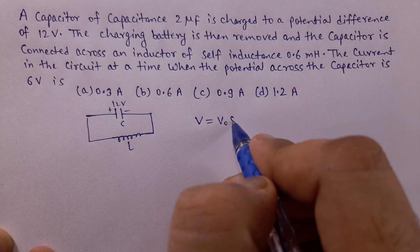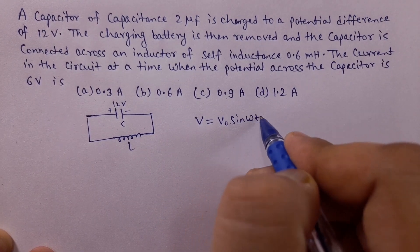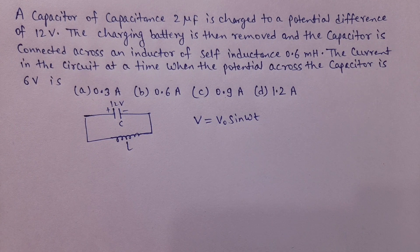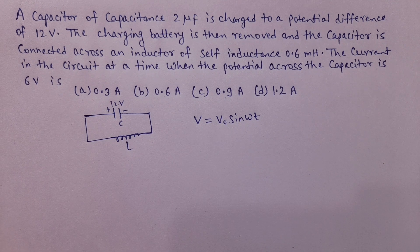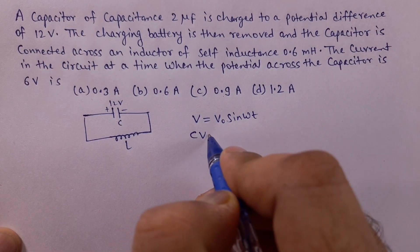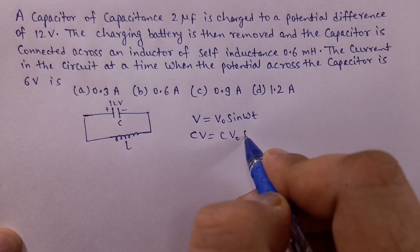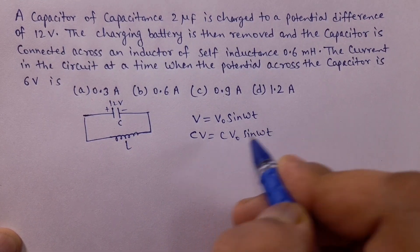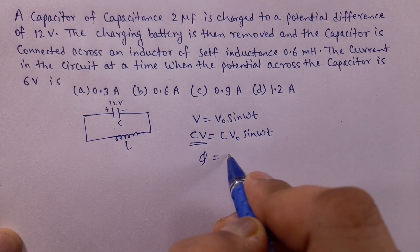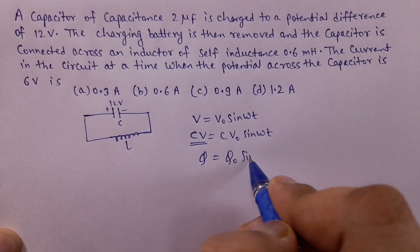So मान लेते हैं voltage: V equal to V₀ sin(ωt). क्योंकि voltage भी change होगा capacitor के across — LC oscillation है. So oscillation है तो हम लोग sin या cos function मानेंगे. अगर C से हम लोग both sides multiply करें, तो CV = CV₀ sin(ωt). This is the charge at any time t, and this is the maximum charge Q₀ = CV₀.